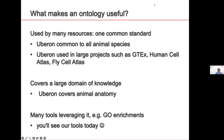What makes these ontologies useful is that they are used by many resources — one common standard. The Gene Ontology is used in major databases, and UBERON is used across all animal species and all major projects annotating expression or other anatomical features. GTEx annotates to UBERON, the Human Cell Atlas annotates to UBERON, and the Fly Cell Atlas annotates to UBERON. We are the main provider of tools for UBERON, as you will see later today.